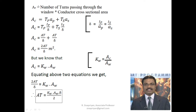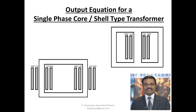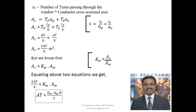For single-phase core type transformer, all the LV windings and all the HV windings pass through the single window, so all primary and secondary turns pass through that one window. For the shell type transformer, there are two windows — taking either window, all primary windings as well as all secondary windings pass through it. So the Ac calculation method is the same for both types.